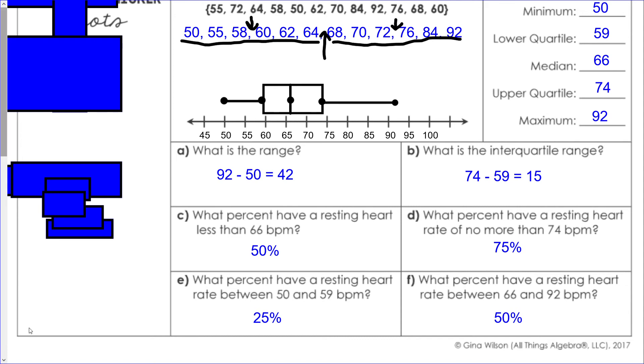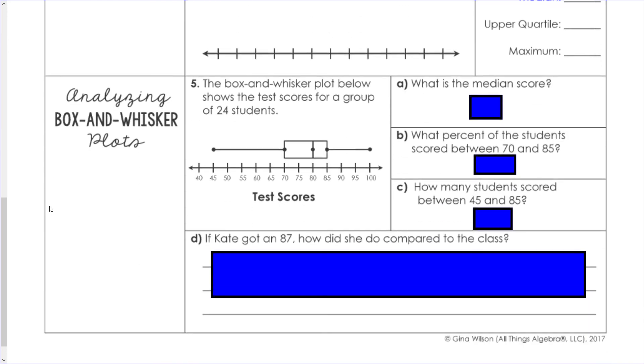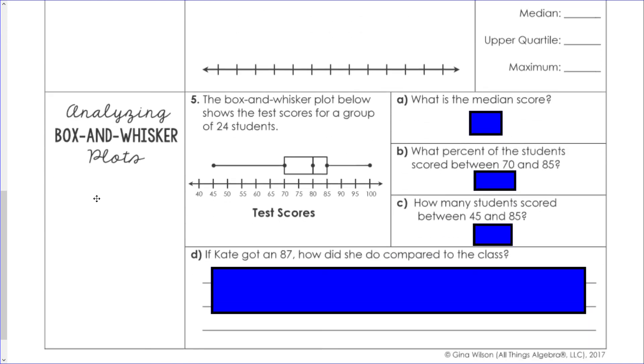Now let's do a quick analysis of box and whisker plots. When you're analyzing them, just remember what the dots represent. This is on the second page of the notes I sent out. What is the median score? That's the line right in the middle, so the median score is 80.